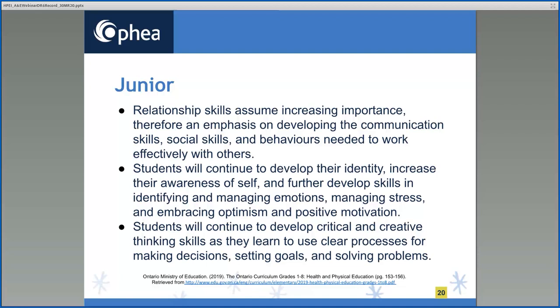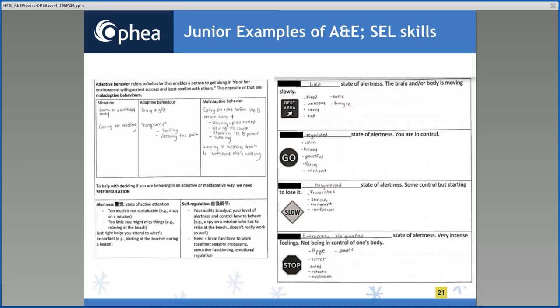Here are some junior examples from educators that have embedded SEL skills into their assessment and evaluation practices. In this example, the health teacher worked in collaboration with the homeroom teacher to ensure that students have a common knowledge and language of what adaptive and maladaptive behaviors are, along with understanding how to regulate these behaviors. This was purposely explored at the beginning of the year to set up norms and establish common language to support students' emotional learning throughout the year while learning specific expectations within Strand D healthy living. Adaptive behaviors refer to behaviors that enable a person to get along in their environment with greatest success and least conflict with others; maladaptive behavior is the opposite.